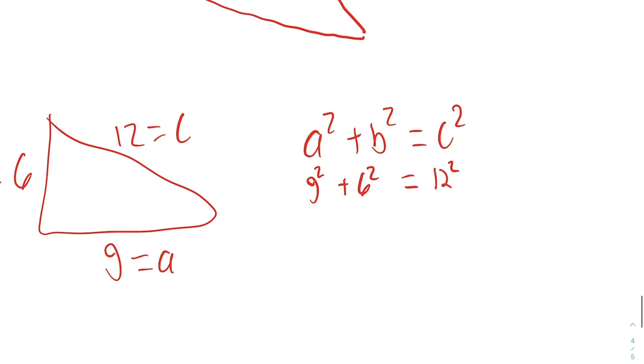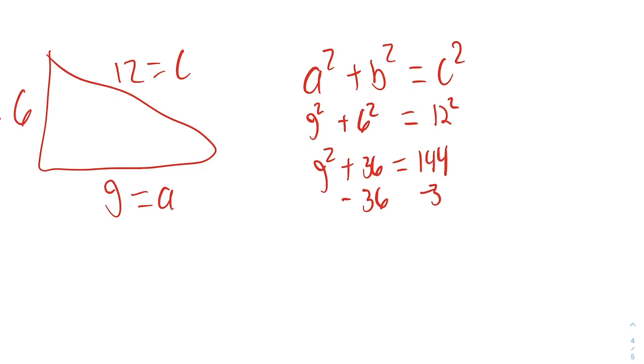We can simplify the 6 squared and the 12 squared. G squared plus 36 equals 144. Then we're going to solve for G by subtracting 36. That means that 144 minus 36, which is equal to 108, is equal to G squared.